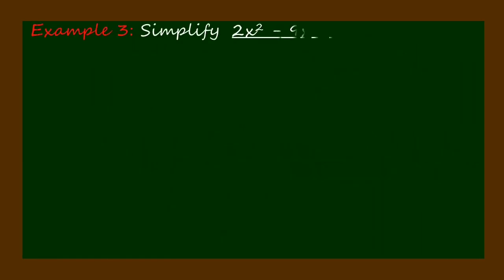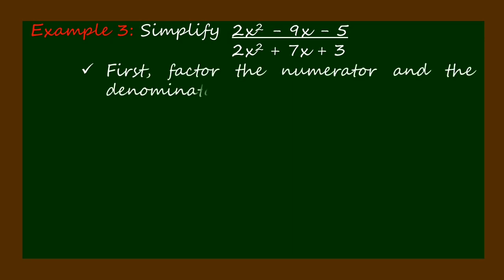Example 3: Simplify (2x² - 9x - 5)/(2x² + 7x + 3).